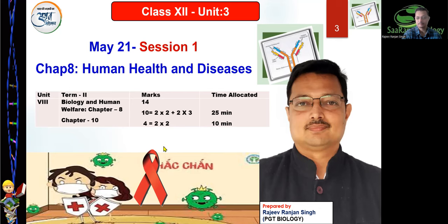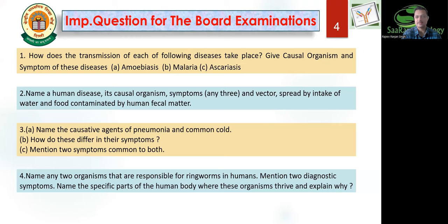Let us look at some important questions for the board examination. For example: 'How does the transmission of amoebiasis, malaria, and ascariasis take place? Give the causal organism and symptoms.' Another question: 'Name a human disease, its causal organism, symptoms, and vector spread by intake of water and food contaminated by human fecal matter.' These can be application-type questions where you need to apply your understanding in a different situation.